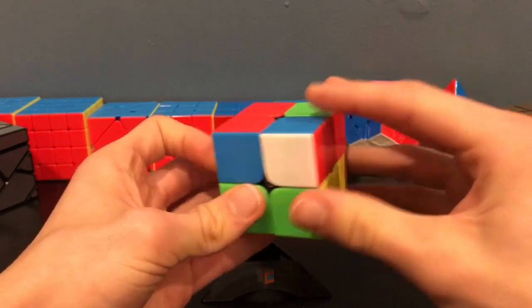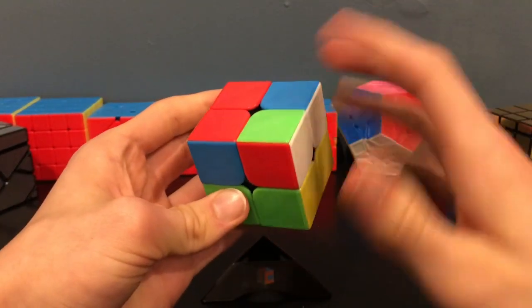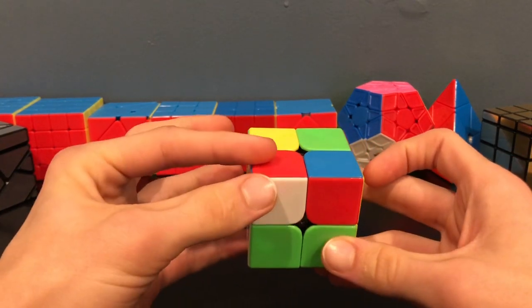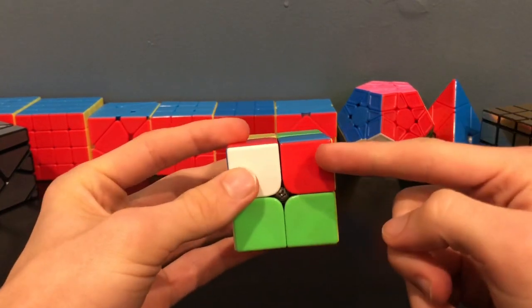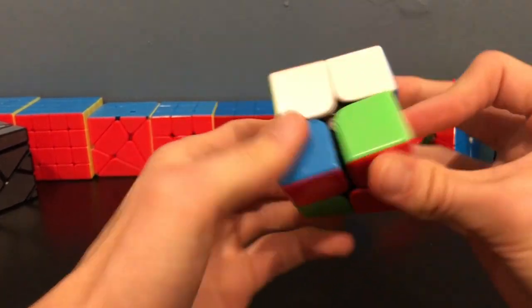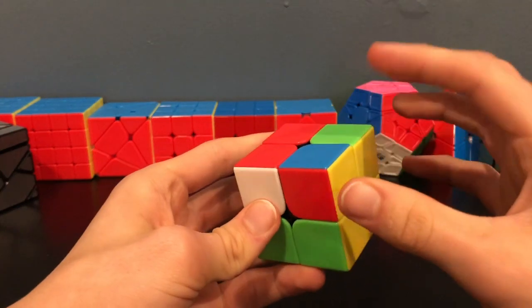This case, by doing a T-PERM here, will then just create that blinker case. If you have either of the Sune cases, then you will want to hold this dot closest to you, and then you don't want a dot facing you. Then you will just turn it like this, do a T-PERM algorithm, and then it will build this blinker case.